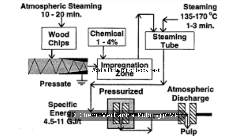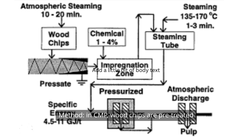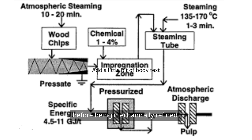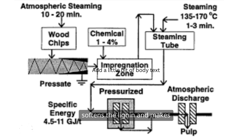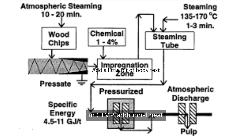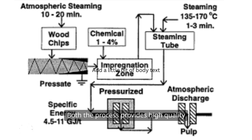D: Chemimechanical Pulping (CMP) and Chemothermomechanical Pulping (CTMP). Method: in CMP, wood chips are pre-treated with chemicals, such as sodium sulphite, before being mechanically refined. This chemical treatment partially softens the lignin and makes it easier to separate the fibres. In CTMP, additional heat is added to the CMP process. Both processes provide high-quality fibre and high-quality paper.